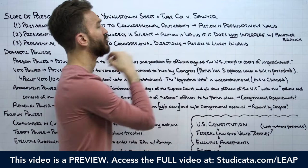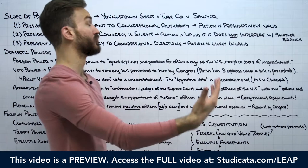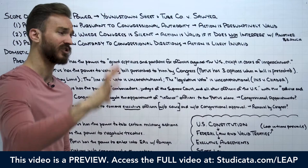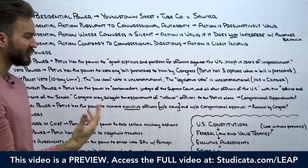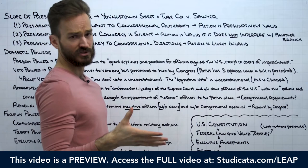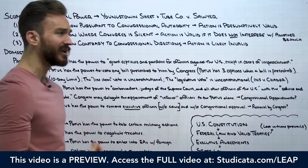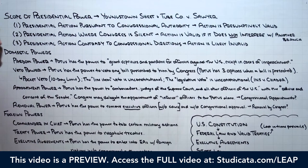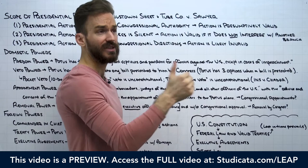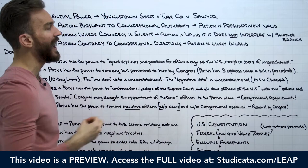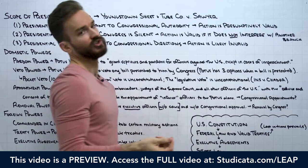The case went all the way to the Supreme Court. The President argued that while he might not have express constitutional power to take control of steel mills, if we look at all of his powers in the aggregate — the Commander-in-Chief Clause and his power as Chief Executive — we can see that in a time of war, where national security requires steel, he has the implied power to take control of steel production in this limited situation. The Court rejected this, holding it was outside the scope of presidential power.